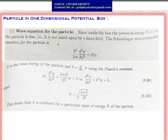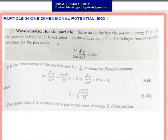Here the particle moves only along the x-direction, so the equation is written in terms of x. Since 2mE/ℏ² is a constant (as m, E, and ℏ² are all constants), we substitute it with k², giving: d²ψ/dx² + k²ψ = 0, where k = √(2mE/ℏ²). This shows that k is constant for a particular value of energy E of the particle.